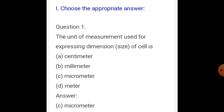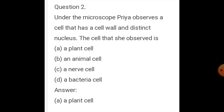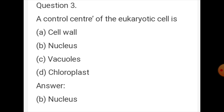Evaluation — Choose the appropriate answer. Question 1: The unit of measurement used for expressing dimensions of a cell is micrometer. Question 2: Under the microscope, Priya observes a cell that has a cell wall and a distinct nucleus — this cell is a plant cell. Question 3: The control center of the eukaryotic cell is the nucleus.